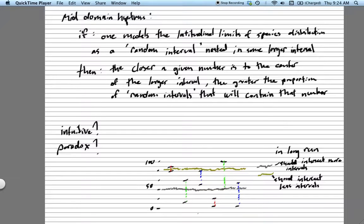So to state the hypothesis, if we model the latitudinal limits of species distribution as a random interval nested in some larger interval, then if we select some number, the closer that number is to the middle or the center of the larger interval we're considering, the greater the proportion of random intervals generated within that larger interval that will contain that number.